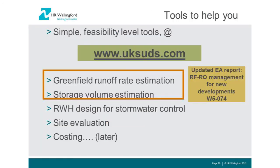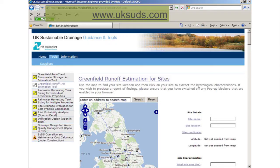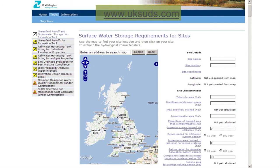A few tools are available to help. The SUDS manual is one. uksuds.com has tools allowing you to estimate greenfield runoff rates, estimate attenuation and long-term storage volumes, design rainwater harvesting system volumes for stormwater control, and site evaluation tools with cost tools coming. These tools are based on an EA report also available on that website. You click on a map, get the rainfall data, and it calculates greenfield runoff rates. There's also a rainwater harvesting tool and a surface water storage tool where you input development characteristics and it outputs an approximate storage figure.